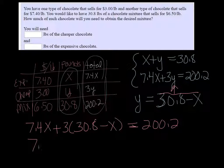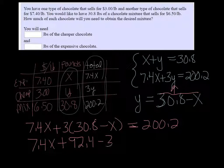Distributing, we get 7.4X plus 3 times 30.8. My calculator says it's 92.4. All right, minus 3X equals 200.2.